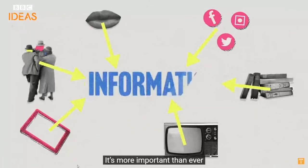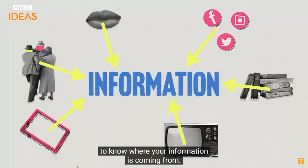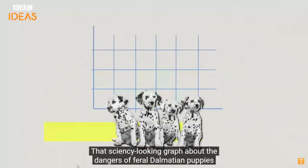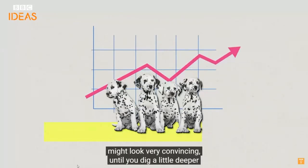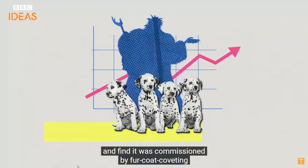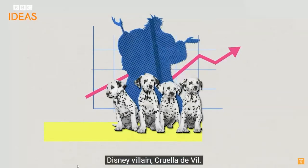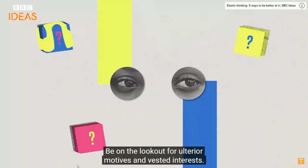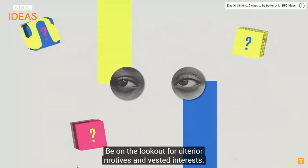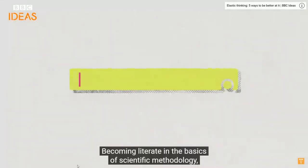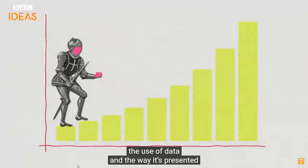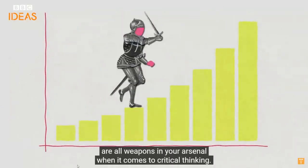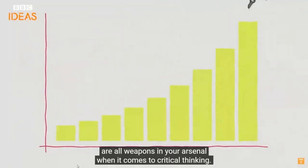It's more important than ever to know where your information is coming from. That sciency-looking graph about the dangers of feral dalmatian puppies might look convincing until you find it was commissioned by fur-coat-coveting Disney villain Cruella de Vil. Be on the lookout for ulterior motives and vested interests. Becoming literate in the basics of scientific methodology, the use of data, and the way it's presented are all weapons in your arsenal for critical thinking.